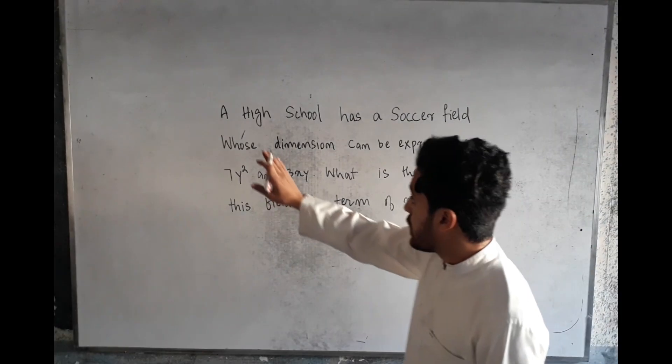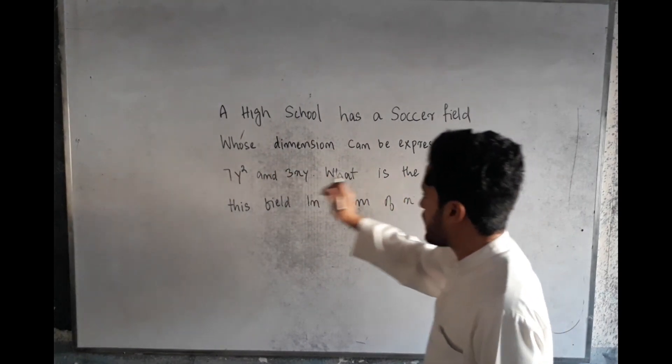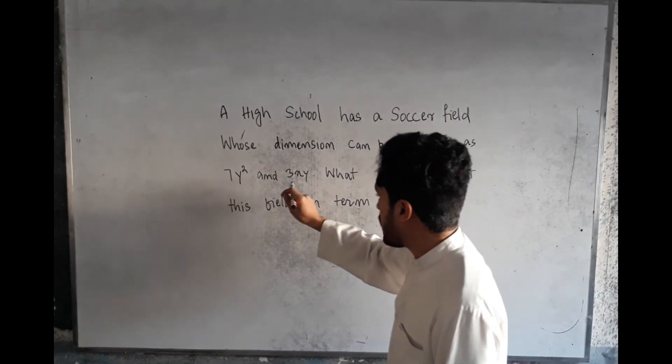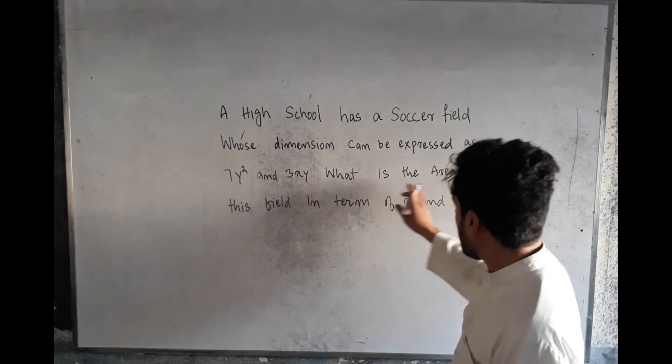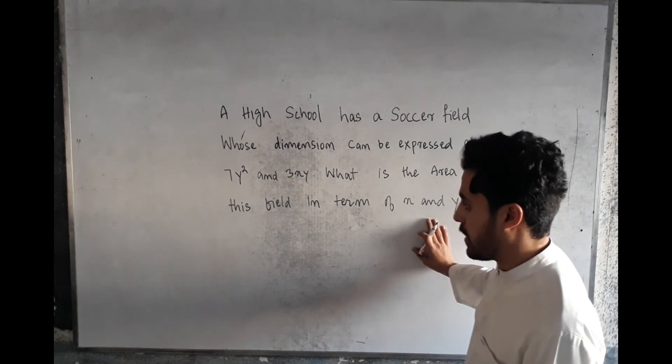A high school has a soccer field whose dimensions can be expressed as 7y² and 3xy. What is the area of this field in terms of x and y?